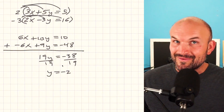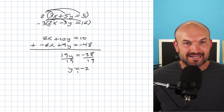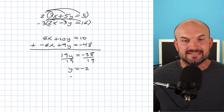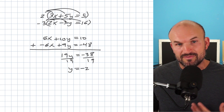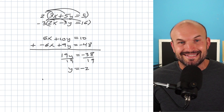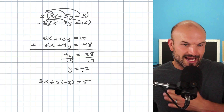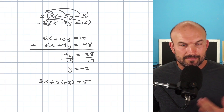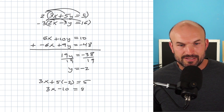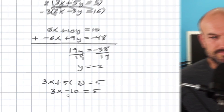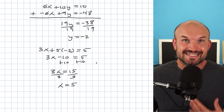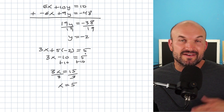Remember, we need to solve for x too. What we need to do is plug y back into one of the equations. I'm not seeing one equation is easier than the other, so I'll just pick the top equation. Sometimes if you have a variable without a coefficient, use that equation — but here I'm not seeing anything strategically better. So I replace y in the top equation with negative 2 and simplify to a two-step equation: 3x minus 10 equals 5. Solving that, the solution is x equals 5 and y equals negative 2.